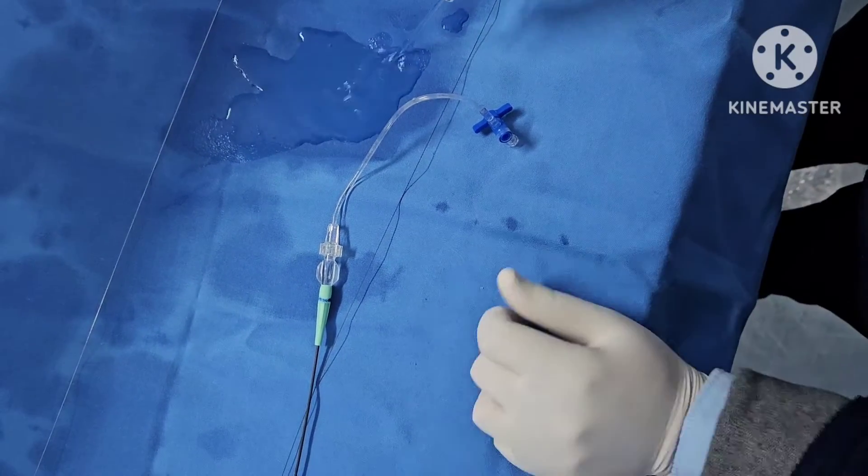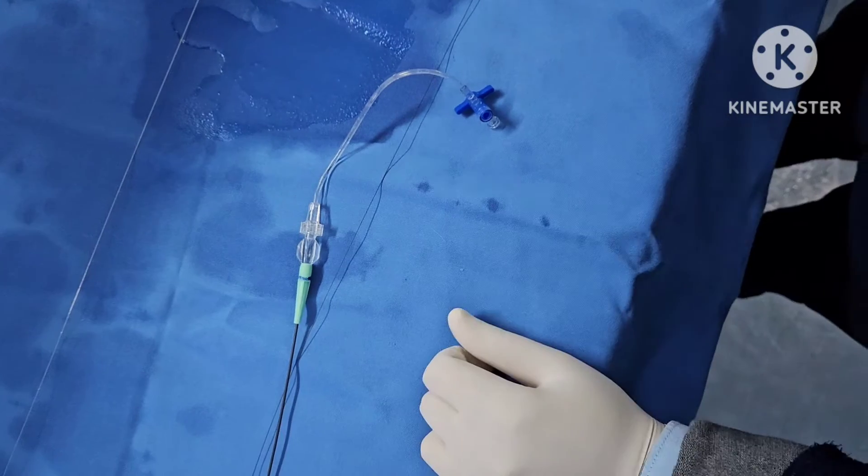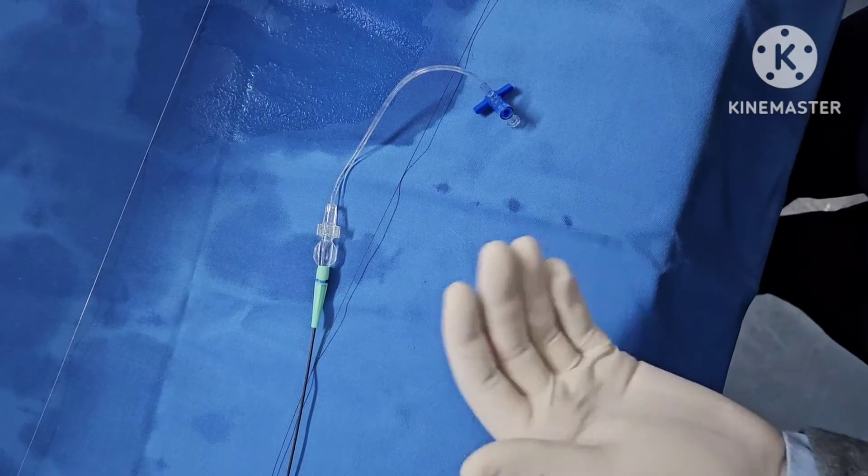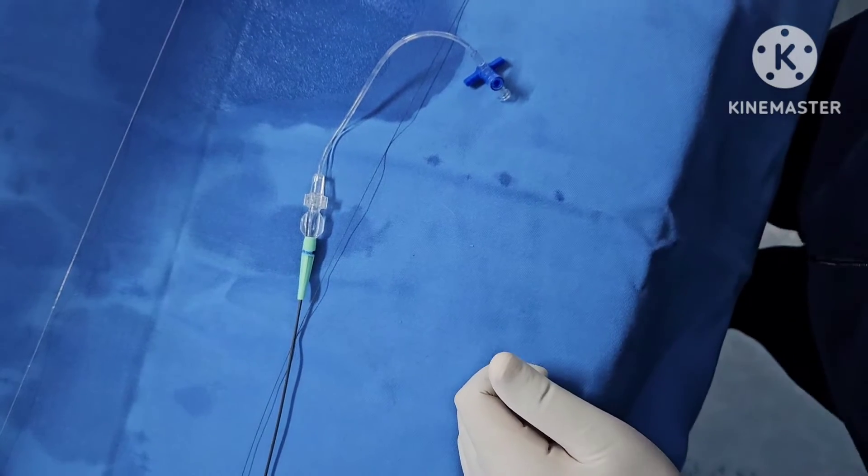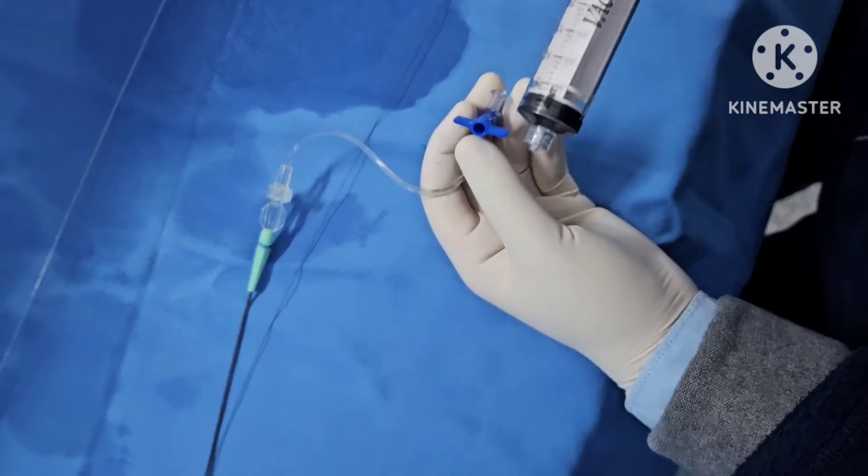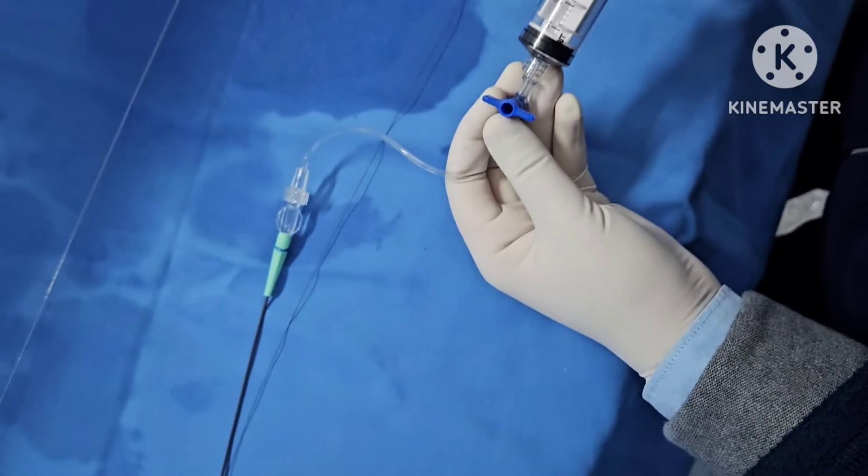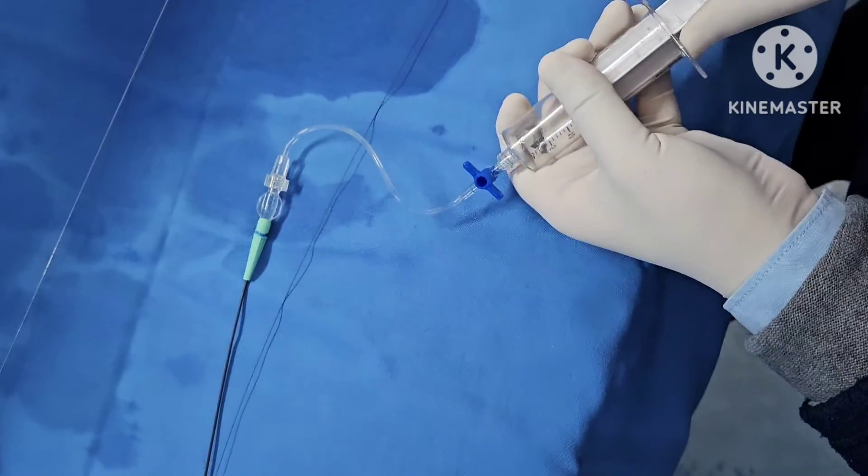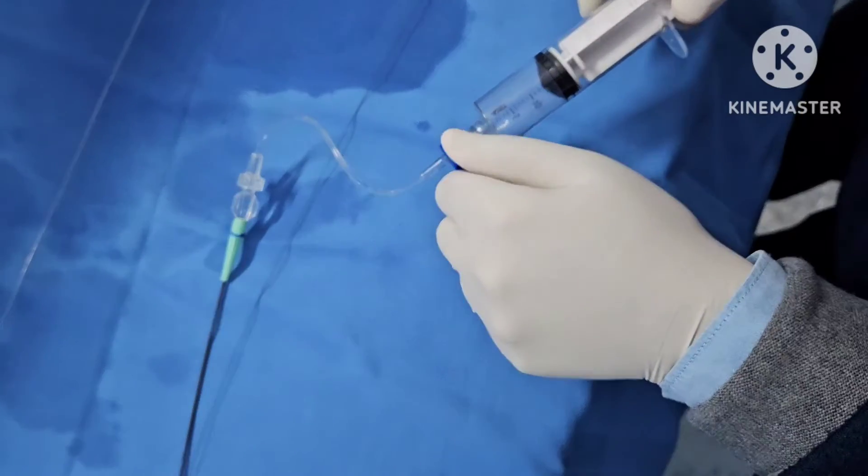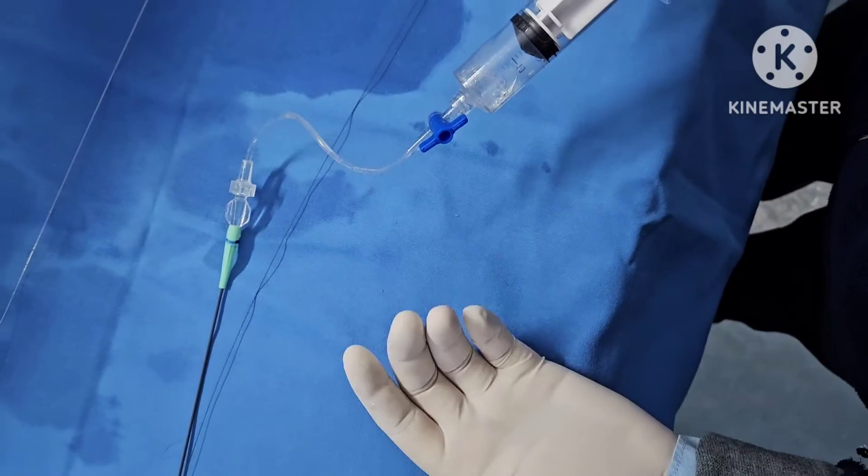And this is very helpful in high thrombus burden. If you want to reintroduce the catheter, you can just again put a negative pressure on this syringe like so, and just put a negative pressure and you can re-aspirate.